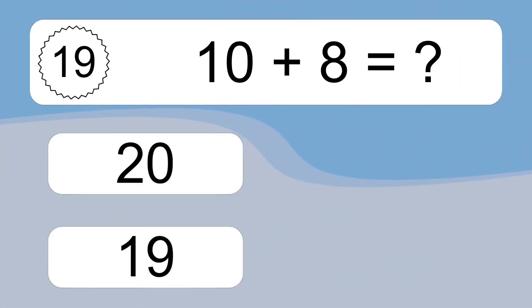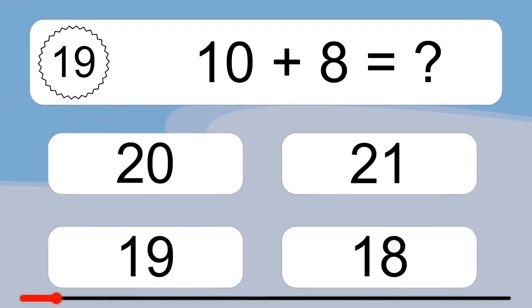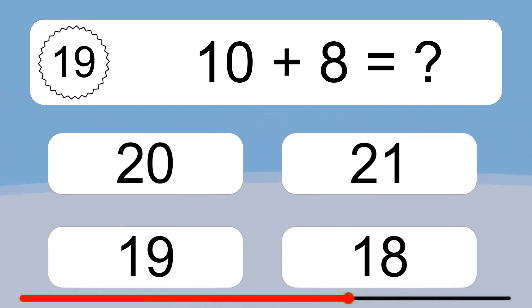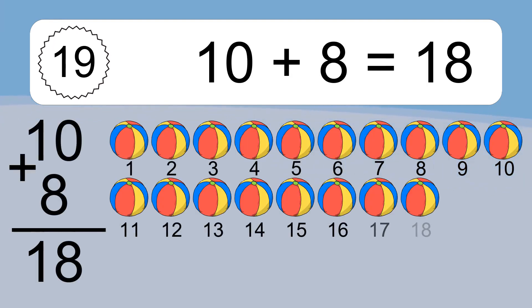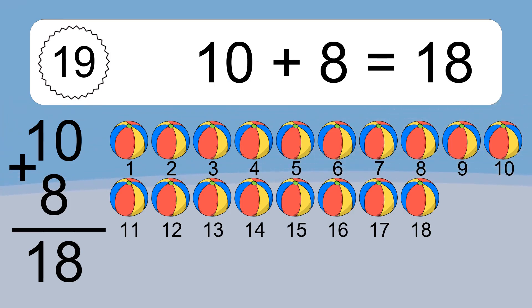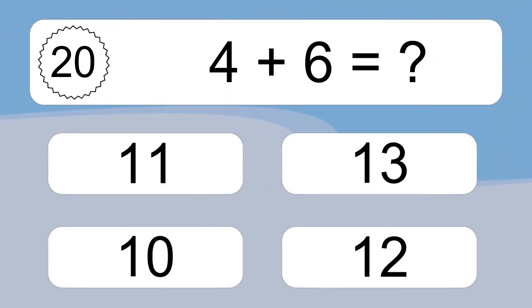10 plus 8 equals what? 10 plus 8 equals 18. Let's count it: 1, 2, 3, 4, 5, 6, 7, 8, 9, 10, 11, 12, 13, 14, 15, 16, 17, 18.